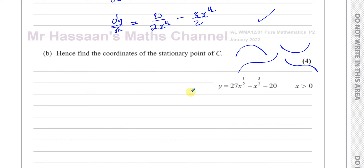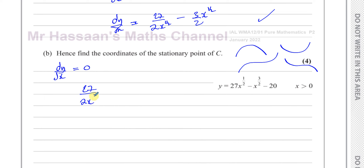The stationary point is where the gradient — given by the gradient function dy/dx — is equal to zero. When you differentiate a function, you find an expression for the gradient of that function. So we equate dy/dx to zero: 27 over 2x to the power of a half, minus 3 over 2x to the power of a half on the numerator, equals zero.